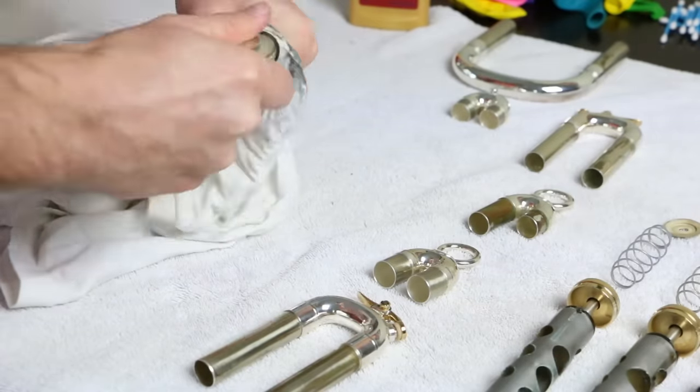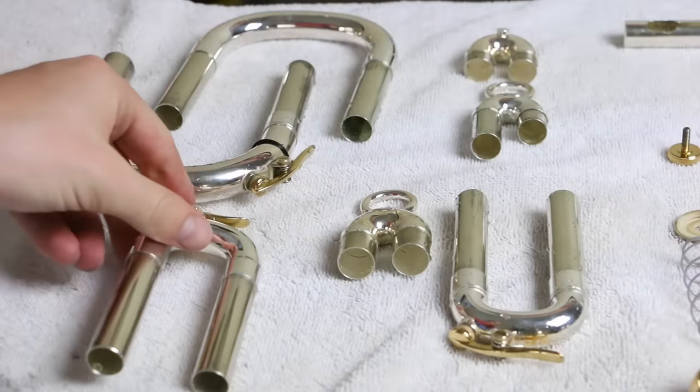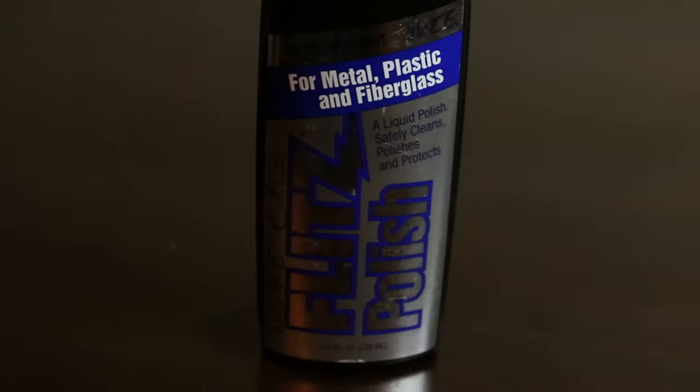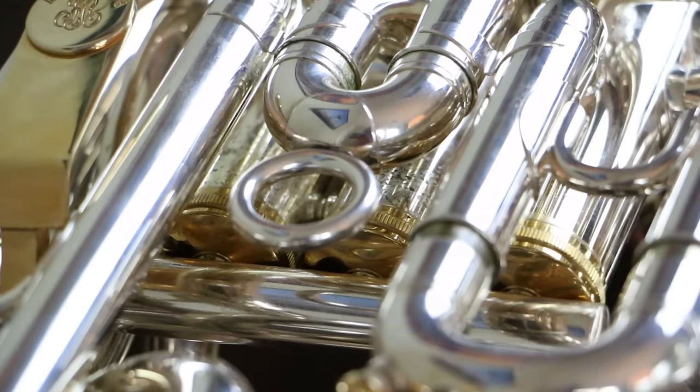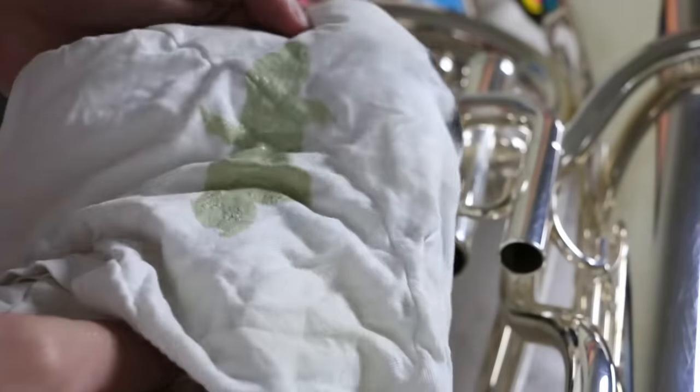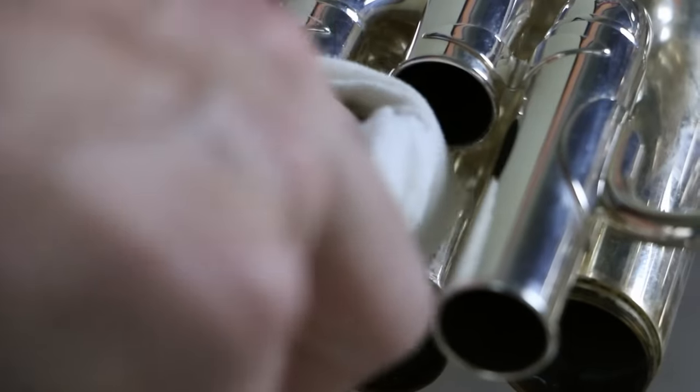Once all of the slides are done, rinse them in some water, hand dry them, and set them down. The next thing we'll use is flitz. This stuff works really really well. It basically melts tarnish off of a horn. Pour some onto a t-shirt and rub it into any major water spots or tarnish. You'll have to work it a little bit, but the spots will dissolve.